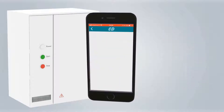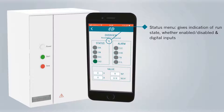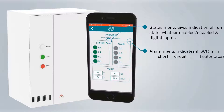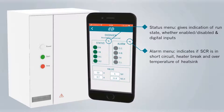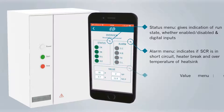Menus include our status menu, giving you indication of run state, whether the unit is enabled or disabled, and digital inputs. The alarm menu indicates if the SCR is in short circuit, a break in the heater elements, and whether the heat sink is over a critical temperature.